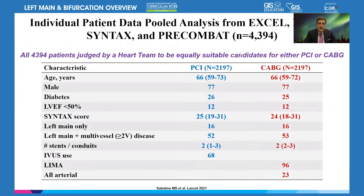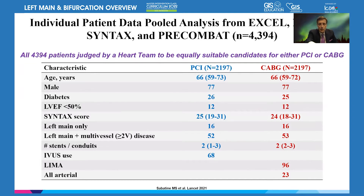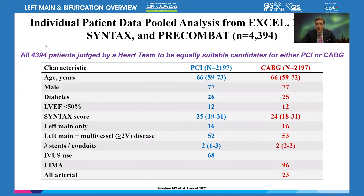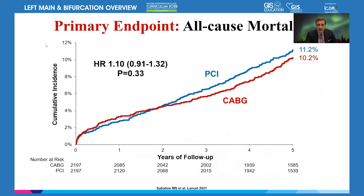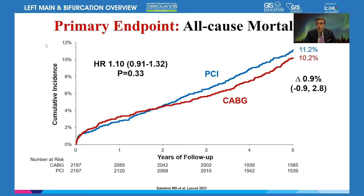Let's go over the latest evidence. We have an individual patient meta-analysis, pooled analysis of over 4,000 patients between EXCEL, NOBLE, SYNTAX, and PRECOMBAT — randomized studies including patients with either PCI or CABG. Various patient characteristics are represented, including a lot of diabetes and various Syntax scores. Look at the curves to understand where your patient may fit.